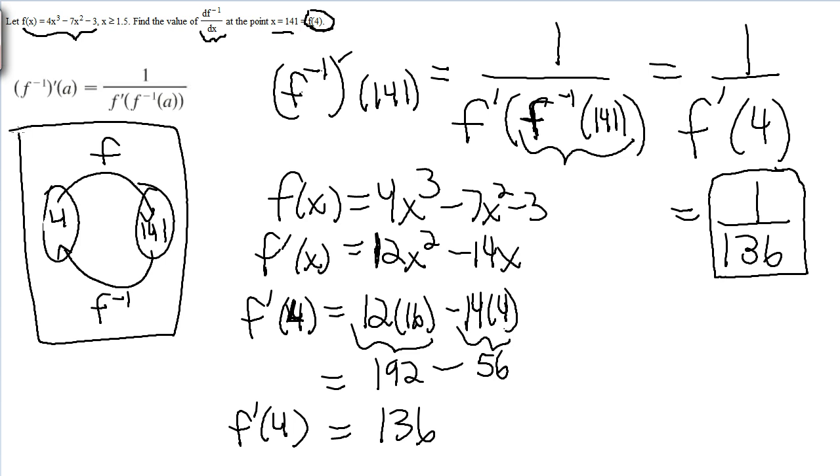And so then, after you find that the input of 4 gives you an output of 141, you don't have to do guess and check like we have to do in the notes. We can just take this given information and use that. Then you just take the derivative and you plug that value into the derivative. Don't forget to take the reciprocal. The answer is one over that. That's your answer.